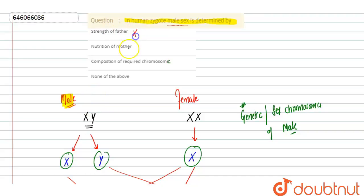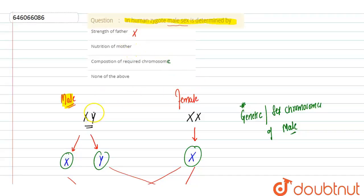The next option is nutrition of the mother. The diet of the mother cannot determine the male sex of the baby. If it were true, then in India where female feticide is increasing — where every family has a so-called preference for a male child — every mother should simply take that nutrition diet to have a male baby born. This is very irrelevant, so this is also an incorrect option.